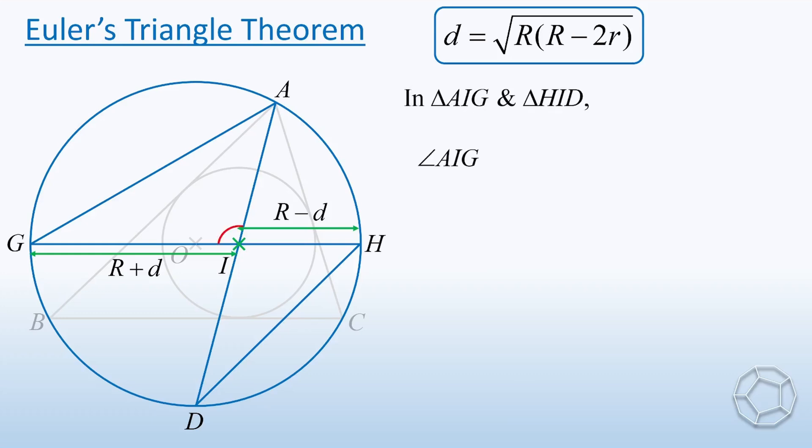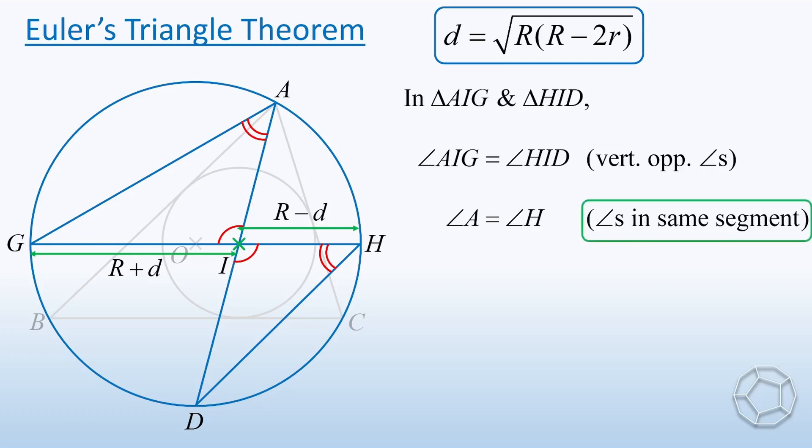Clearly, the two angles at I are equal because they are vertically opposite angles. Next, these two angles at A and H are the same, but angles in same segment. This important theorem will be used three times in the proof. Now with just two pairs of corresponding angles, the third pair of angles must also be the same. Simply because the sum of angles in the triangle is always 180 degrees.